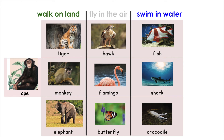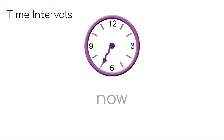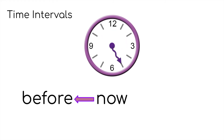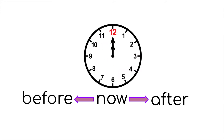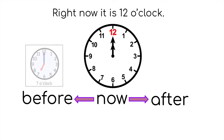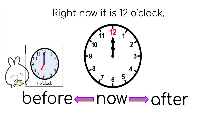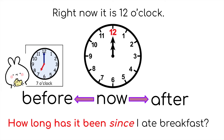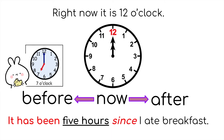Okay, let's move on to math. We talked about time intervals — we look at the clock and see what time it is now, and we look at a time before or a time after. For example, right now it is 12 o'clock, and at 7 o'clock this morning I had some breakfast. The question is: how long has it been since I ate breakfast? We're looking at the time now and asking how long has it been since the time before — since 7 o'clock. The answer is it has been five hours. You subtract: 12 minus 7 is 5.